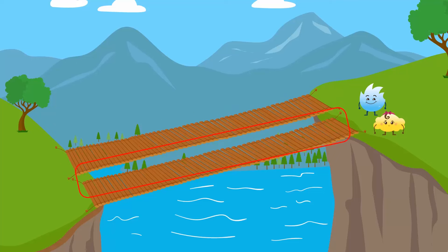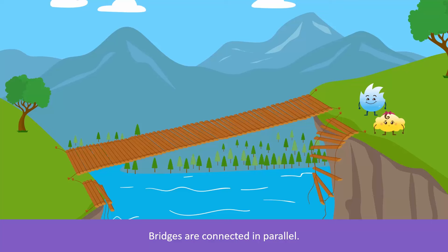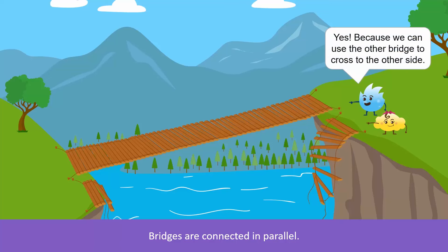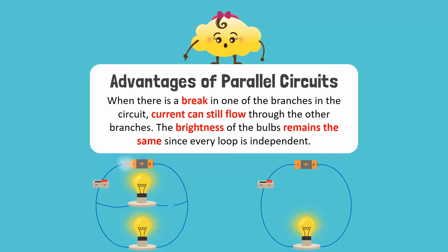Now look at these bridges connected in parallel. What happens when one of the bridges collapses? Can you cross to the other side now? Yes, because we can use the other bridge to cross to the other side. Well done! This is the advantage of a parallel circuit. When there is a break in one of the branches in the circuit, current can still flow through the other branches. Also, the brightness of the bulbs remains the same since every loop is independent.